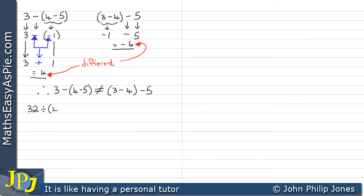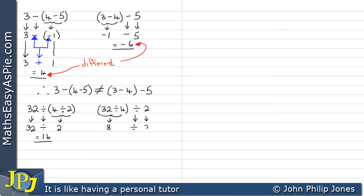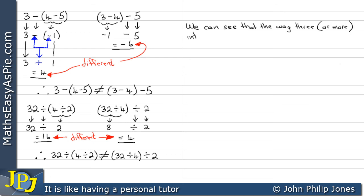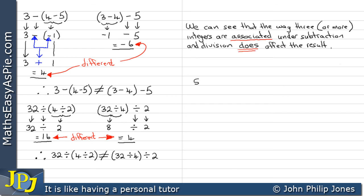Let's do one using division. 32 divided by (4 divided by 2): the bracket gives 2, so we have 32 divided by 2, which is 16. If we now write this as (32 divided by 4) divided by 2, that gives us 8 divided by 2, which gives us 4. So one result is 16 and the other is 4 — they are different. Therefore 32 divided by (4 divided by 2) is not equal to (32 divided by 4) divided by 2. The way 3 or more integers are associated under subtraction and division does affect the result.